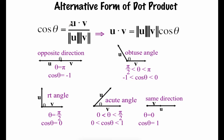We could rearrange that cosine formula to give an alternate form: u·v = |u| · |v| · cos θ. When looking at the angle between vectors, there are different cases: vectors pointing in opposite directions give theta = π (180°); an obtuse angle is between π/2 and π; vectors can create a right angle; an acute angle is between 0 and π/2; or vectors pointing in the same direction give a 0° angle.